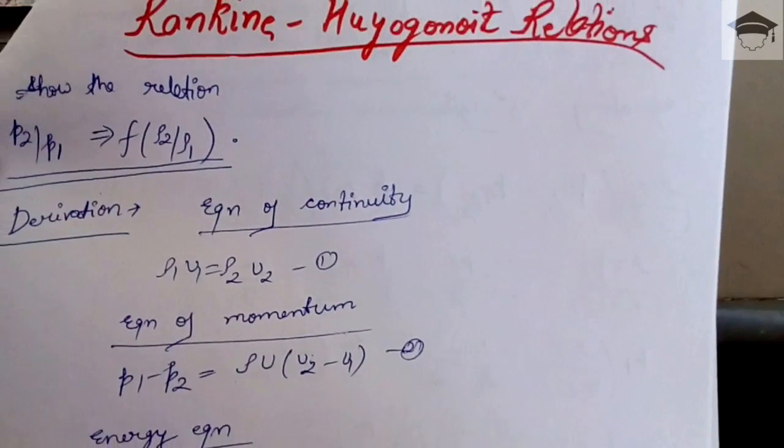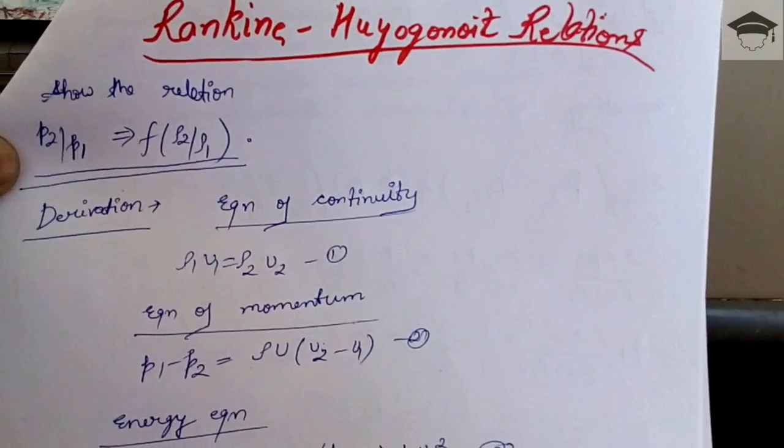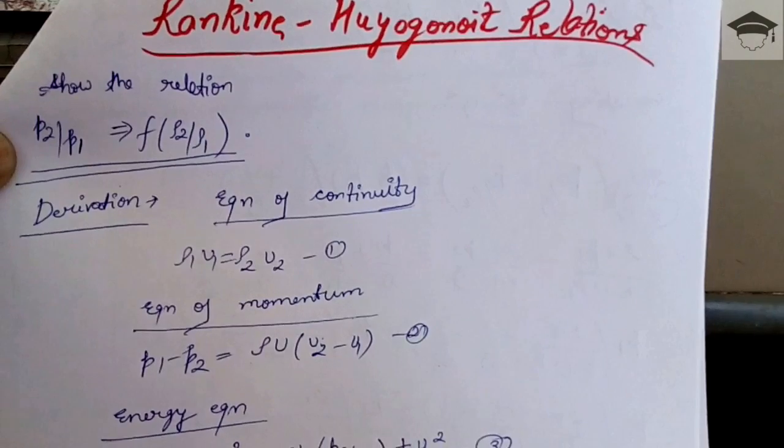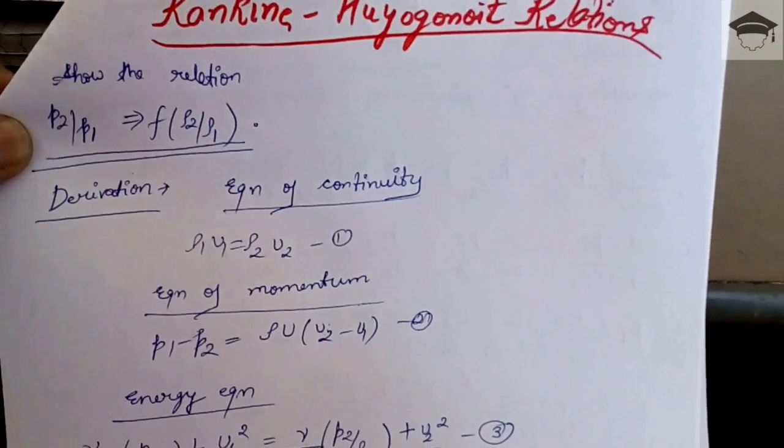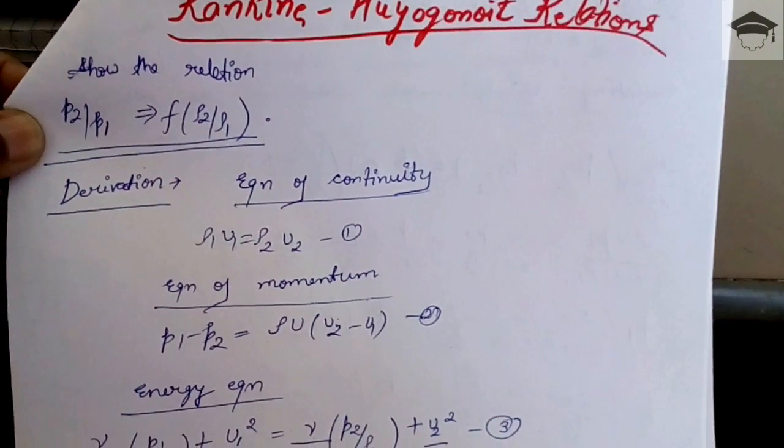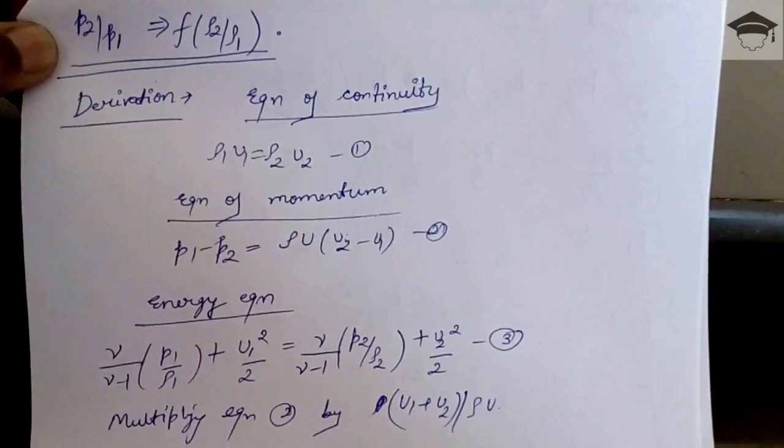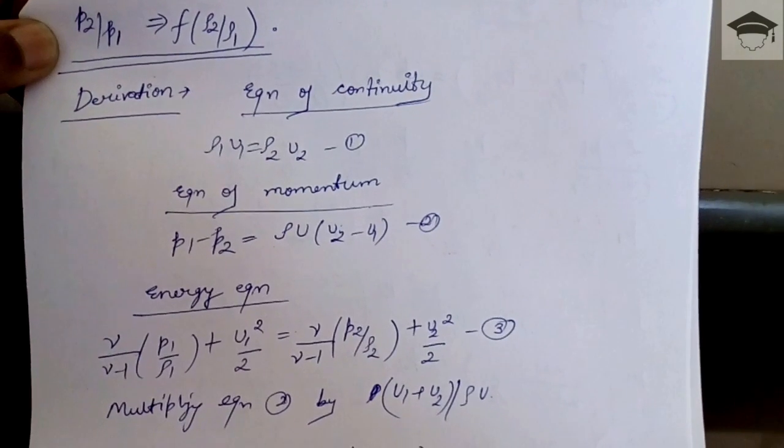The derivation is as follows: equation of continuity ρ1u1 = ρ2u2, equation of momentum p1 - p2 = ρu(u2 - u1). You have to follow from the previous lectures. I am not going to explain how these are derived, so I suggest you watch my previous videos then come back to this topic.